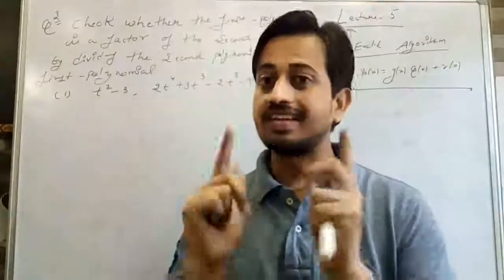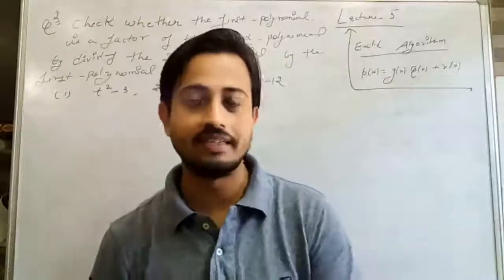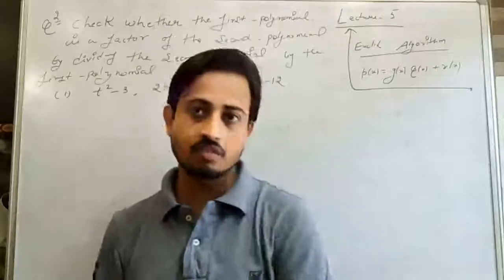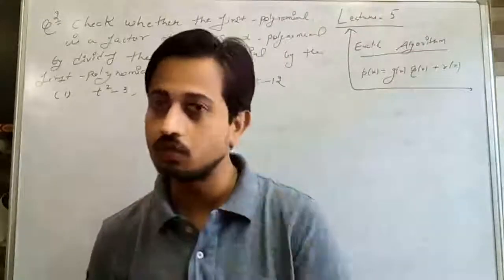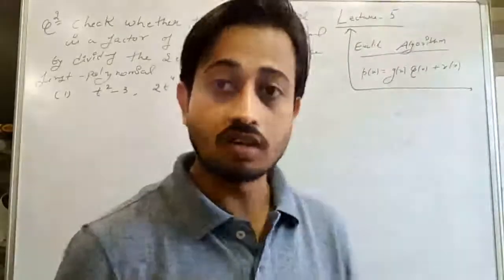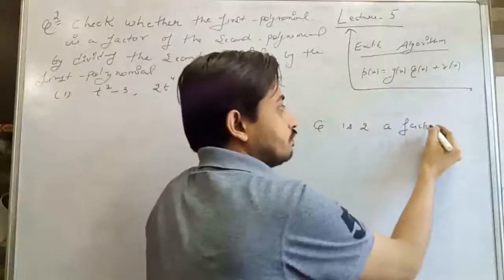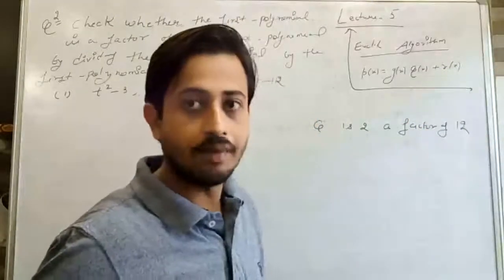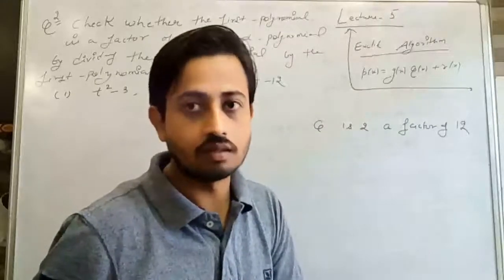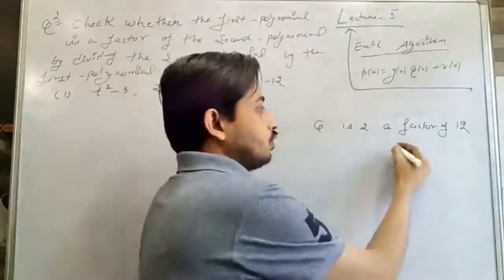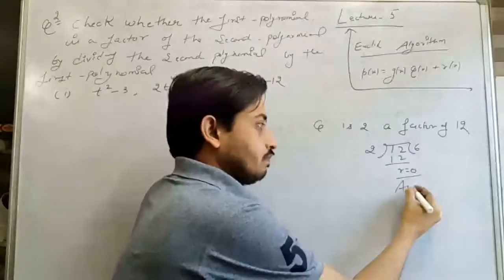Now the second question asks us to check whether the first polynomial is a factor of the second. We know how to check a factor: if we divide the second polynomial by the first and get remainder 0, then it is a factor, otherwise not. For example, is 2 a factor of 12? Dividing 12 by 2, we get remainder 0, so yes — 2 is a factor.